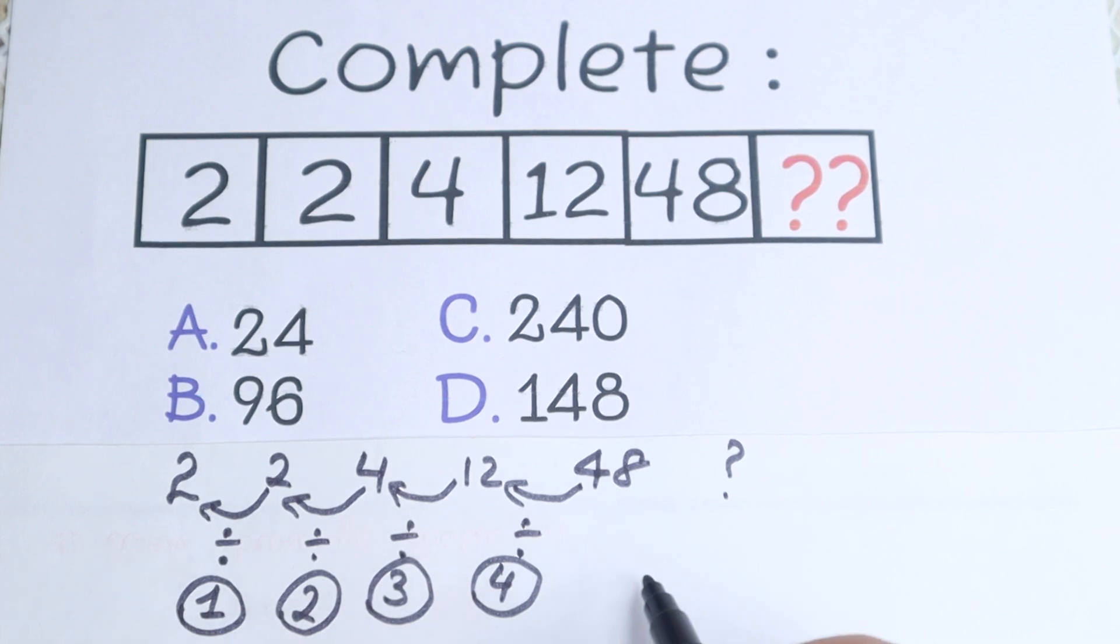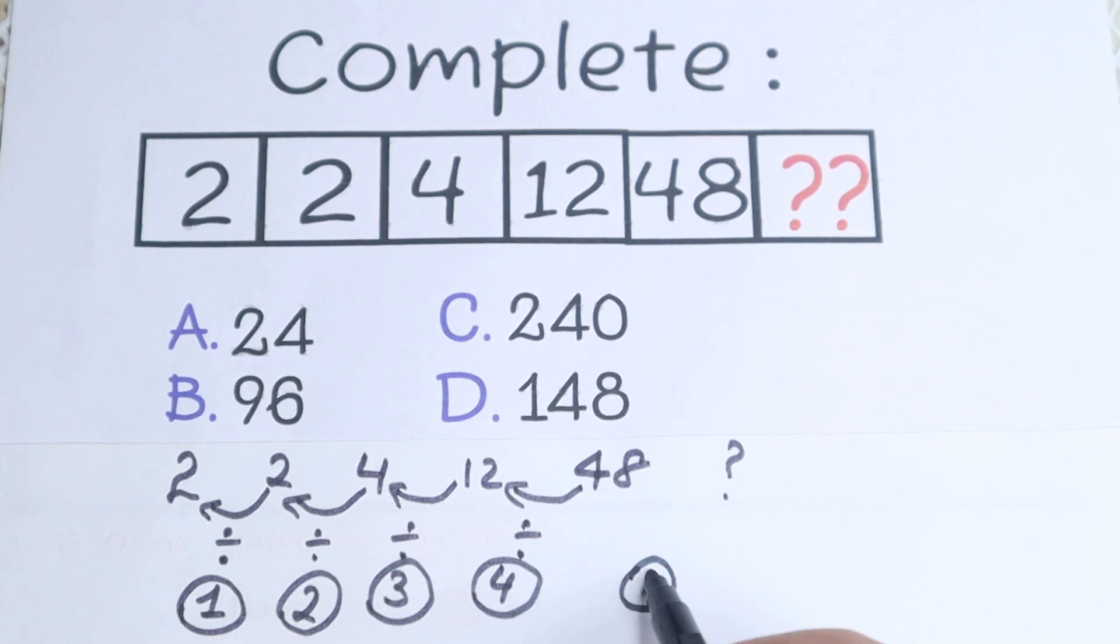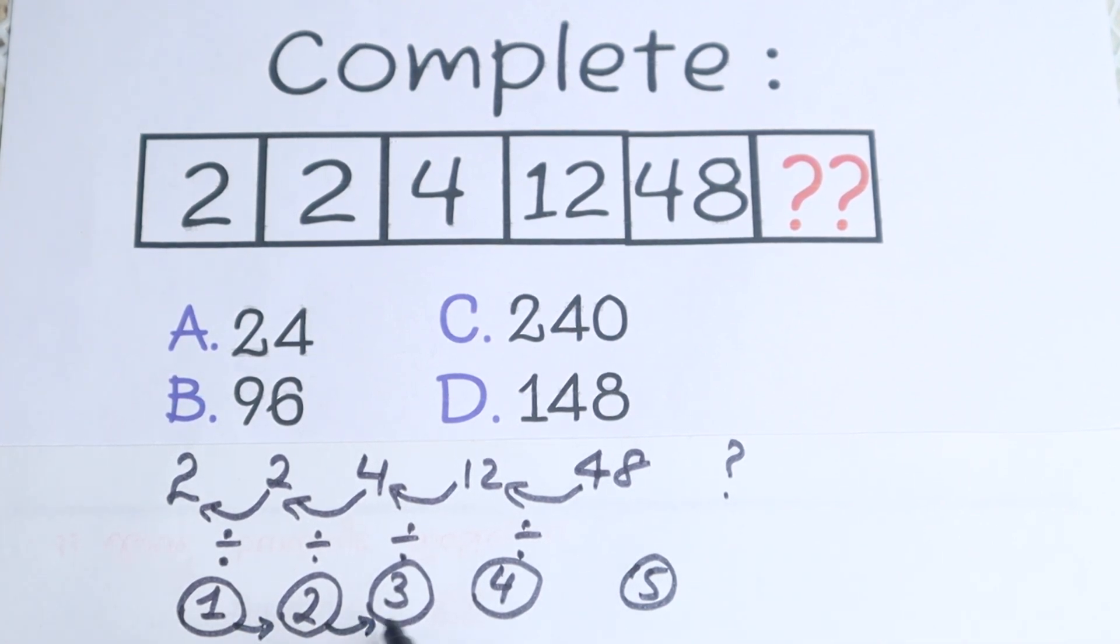And it looks like right here we have in this circle, we will have 5. Because this is our natural order. We all know this order. So 1, 2, 3, 4, and right here it looks like 5.